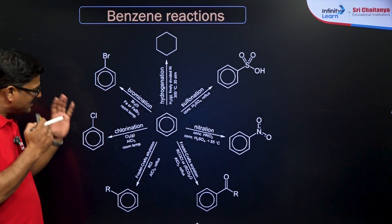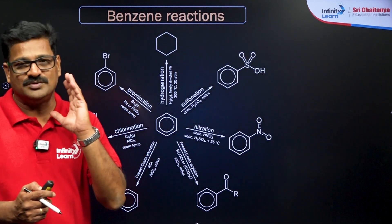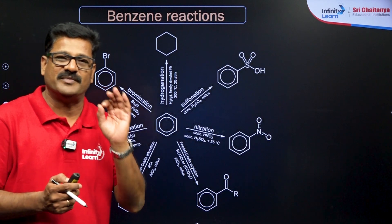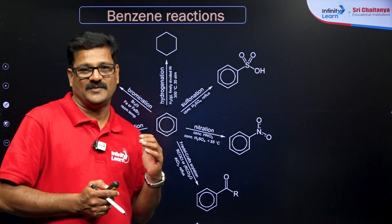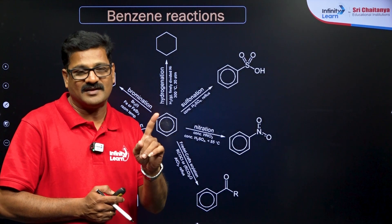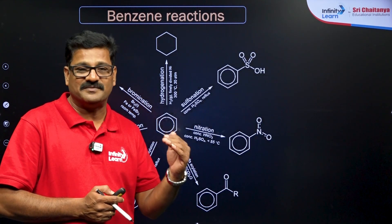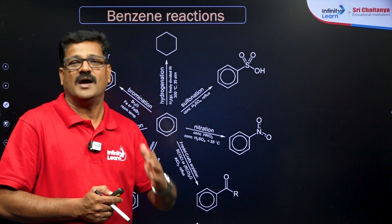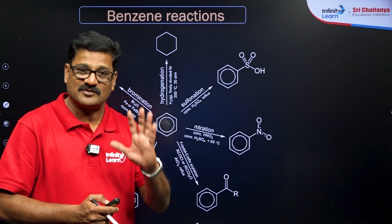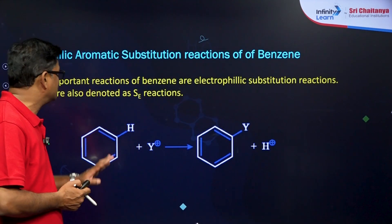Benzene has an aromatic ring. Due to the aromatic delocalization of the pi electron system, the electrons are delocalized below and above the ring. Though it has three pi bonds, it does not behave like an alkene. It behaves completely differently — it does not undergo addition reaction; rather, it undergoes substitution reaction by an electrophile. So these are called electrophilic aromatic substitution reactions.